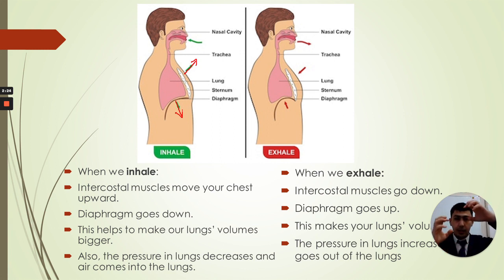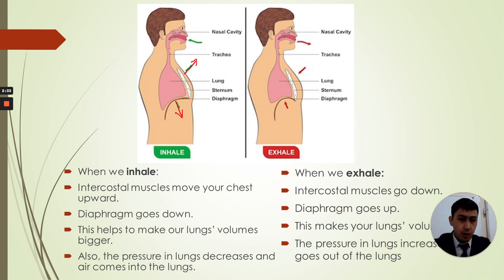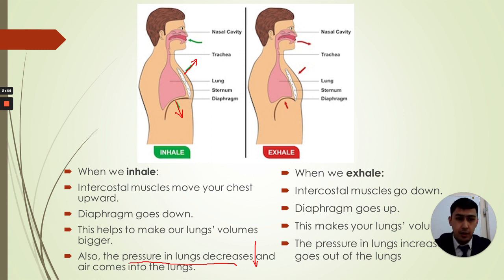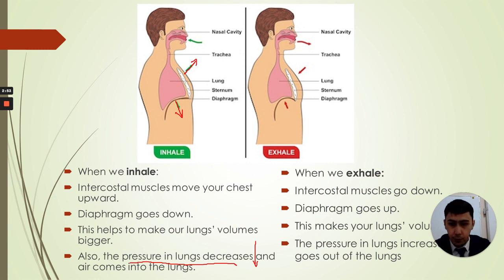When the diaphragm goes down and the chest goes up, the lung volume increases. In this case, the pressure in the lungs drops — it decreases. When the pressure in the lungs decreases, the lungs need to fill with something, and they fill with air. So during inhale: lung volume increases, diaphragm goes down, and chest goes up.